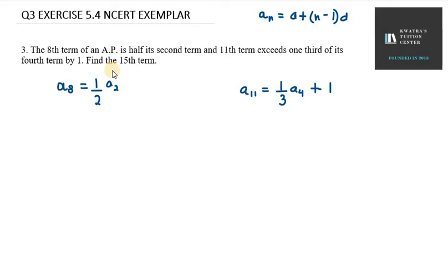For finding the 15th term, we should have A and D. So A8 we define first. How can A8 be written?